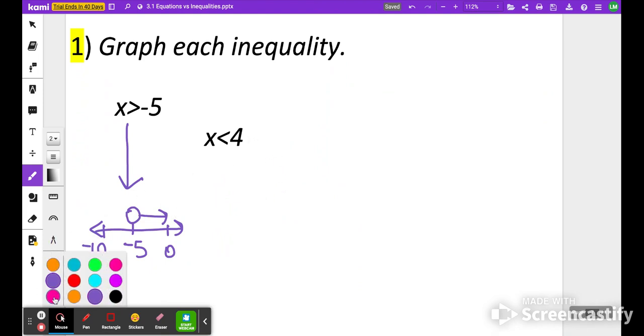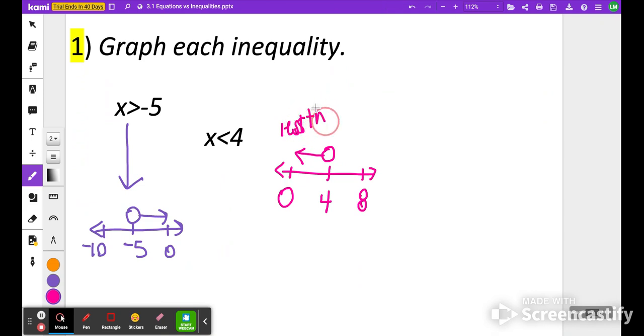Let's try the next one. x is less than 4. Start with maybe 4 in the center, put a zero where zero should go, so zero is going to be here to the left of 4, and then maybe let's do 8, so we're doing increments of 4. Less than means an open circle, and we're going to point to the left because these are the things that are less than 4.